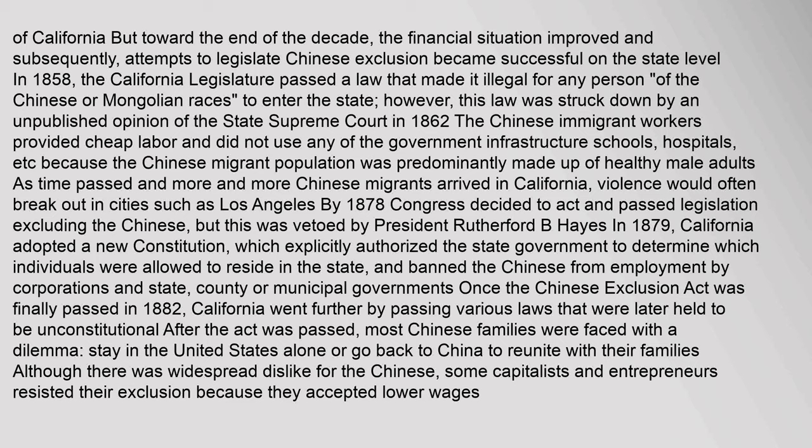Toward the end of the decade, the financial situation improved and attempts to legislate Chinese exclusion became successful at the state level. In 1858, the California legislature passed a law making it illegal for any person of the Chinese or Mongolian races to enter the state; however, this was struck down by the state supreme court. In 1862, Chinese immigrant workers provided cheap labor and did not use government infrastructure such as schools or hospitals, as the Chinese migrant population was predominantly made up of healthy male adults. As more Chinese migrants arrived in California, violence would often break out in cities such as Los Angeles.